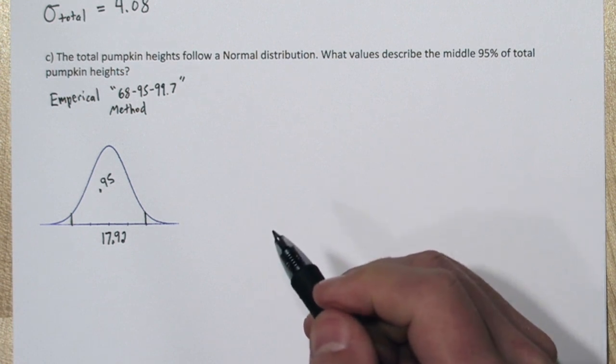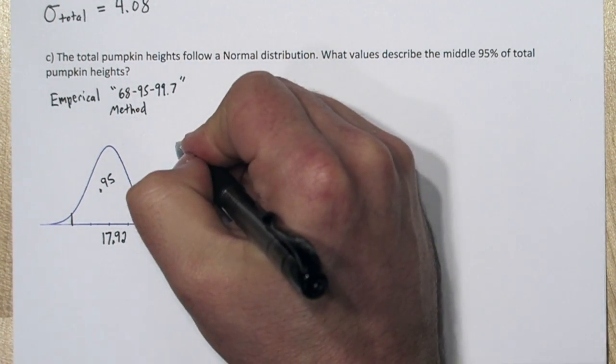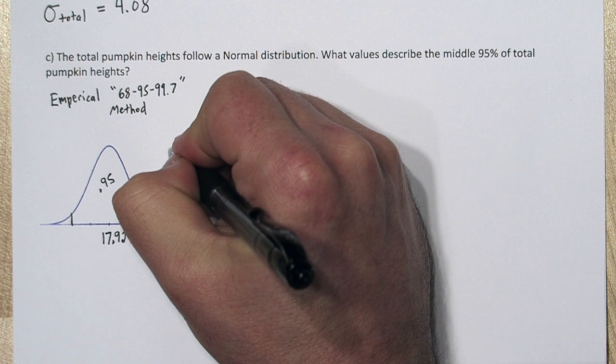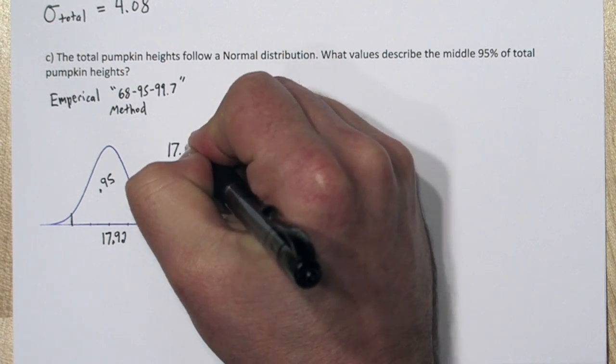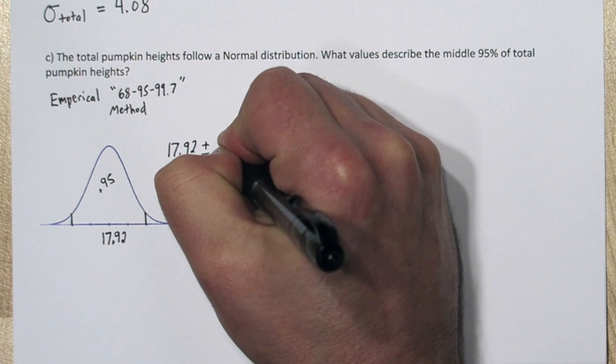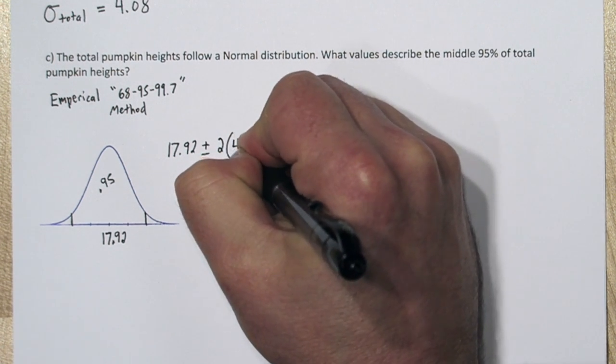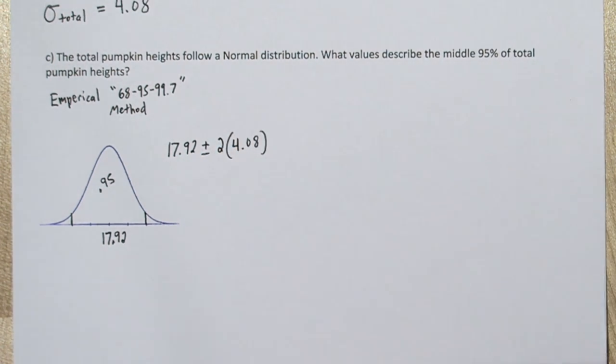So we know the mean is 17.92 from part b. We also know the standard deviation is 4.08. So, using the empirical rule, if we take our 17.92 and we add and subtract two standard deviations, 4.08,